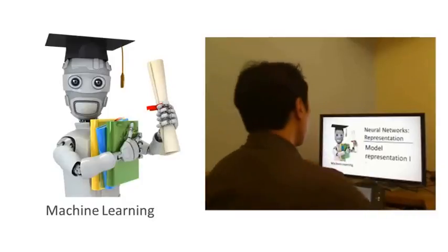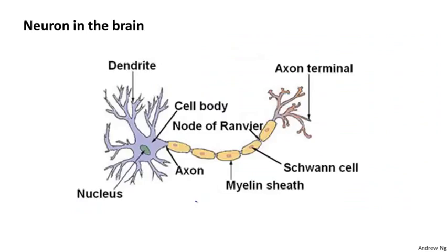Neural networks were developed as simulating neurons or networks of neurons in the brain. So to explain the hypothesis representation, let's start by looking at what a single neuron in the brain looks like. Your brain and mine is jam-packed full of neurons like these, and neurons are cells in the brain.